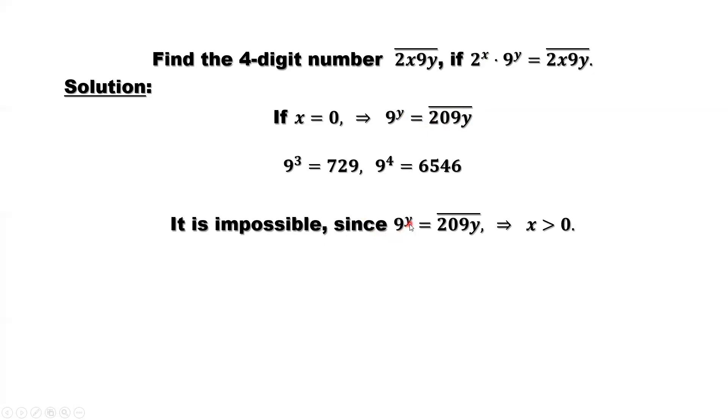Since 9 to the power y equals 2, 0, 9, y, that's 2,000 range. 9 to the power 4 is 6,000. 9 to the power 3 is 700. This implies x is bigger than 0.